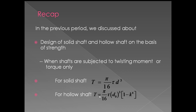For the hollow shaft, torque T equals pi by 16 into tau into d_O cubed into (1 minus k to the power 4), where k equals d_I by d_O. d_I is the inner diameter and d_O is the outer diameter of the hollow shaft. This applies when the shaft is subjected to torque or twisting moment only.